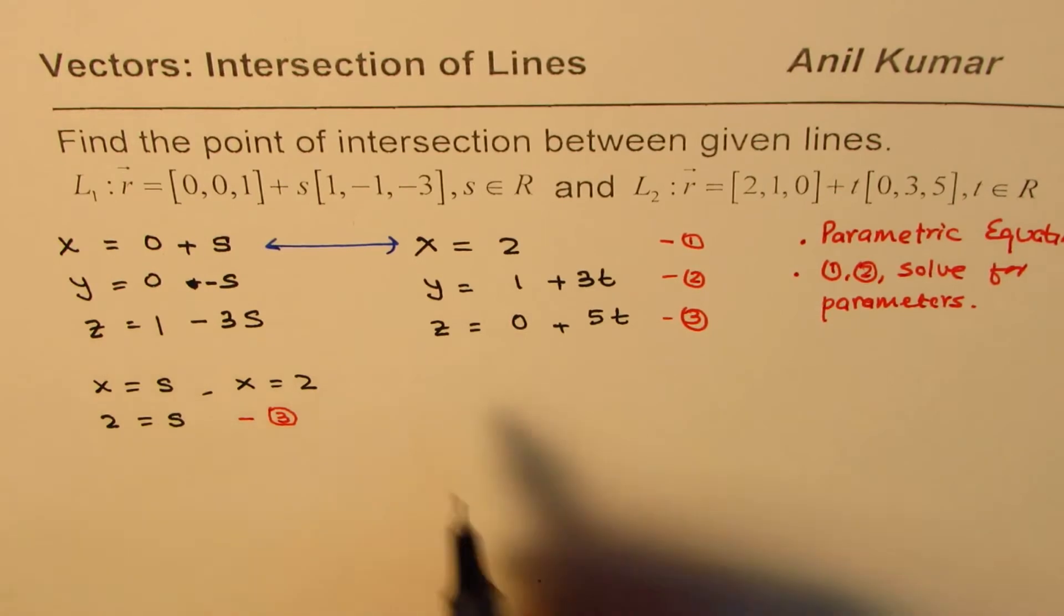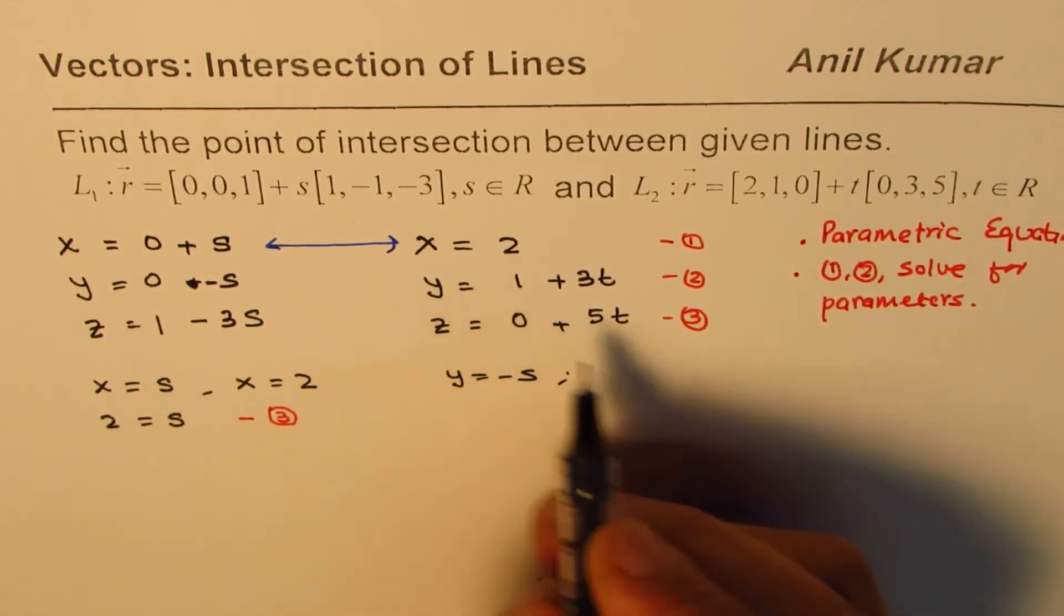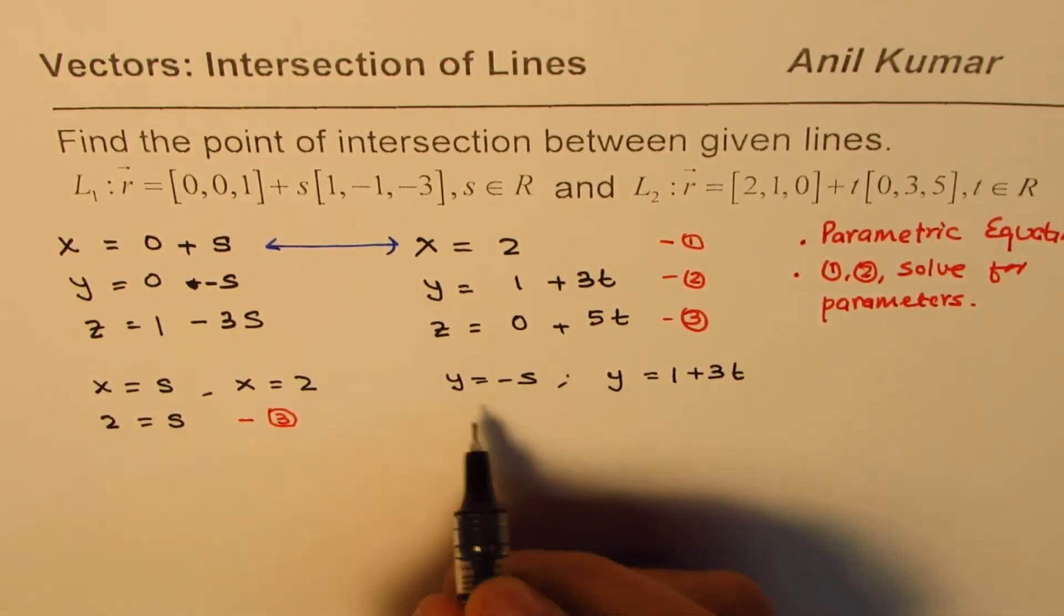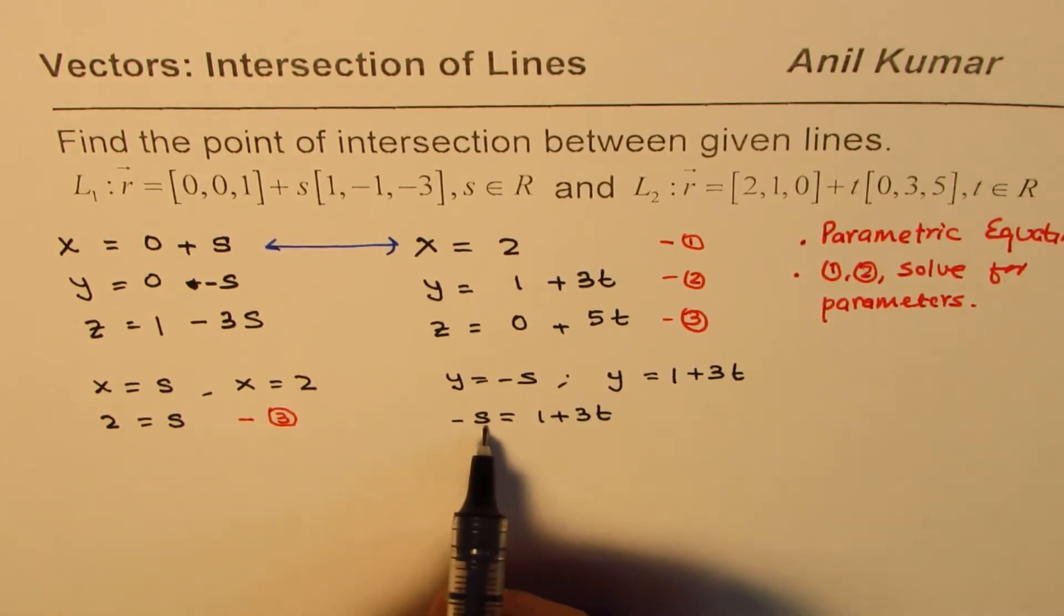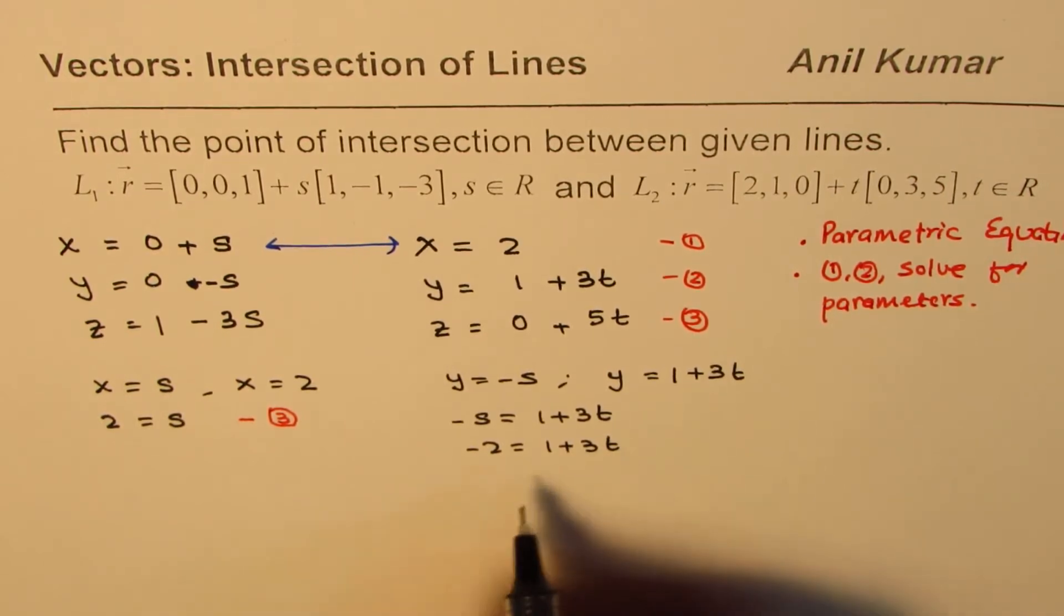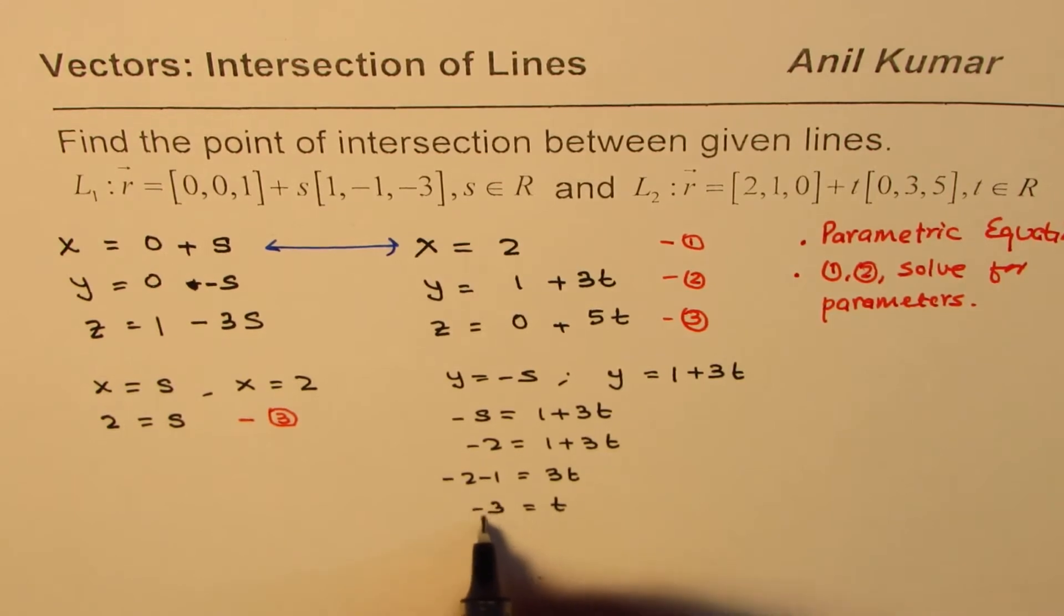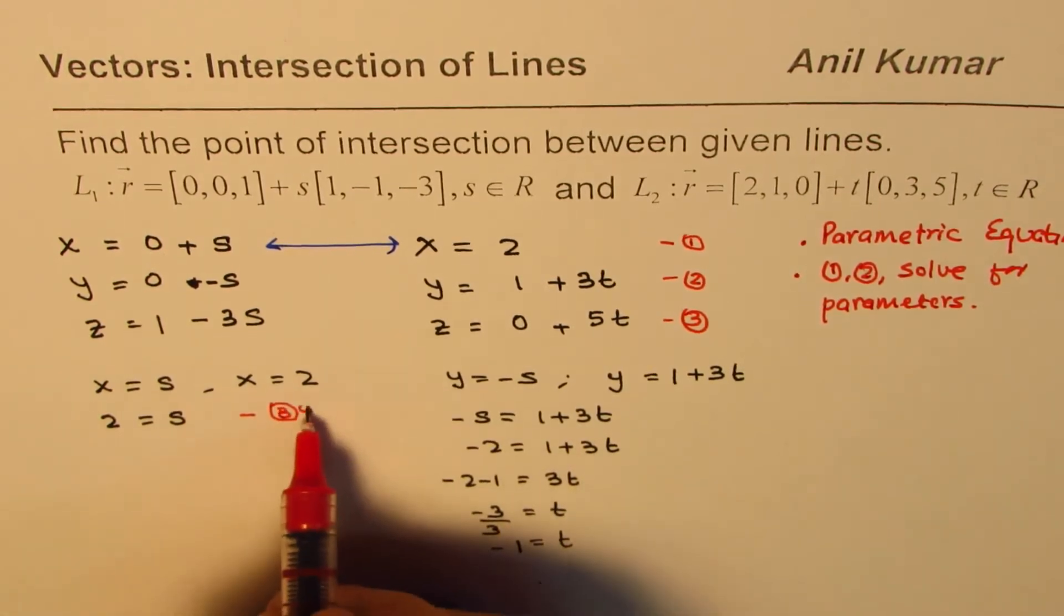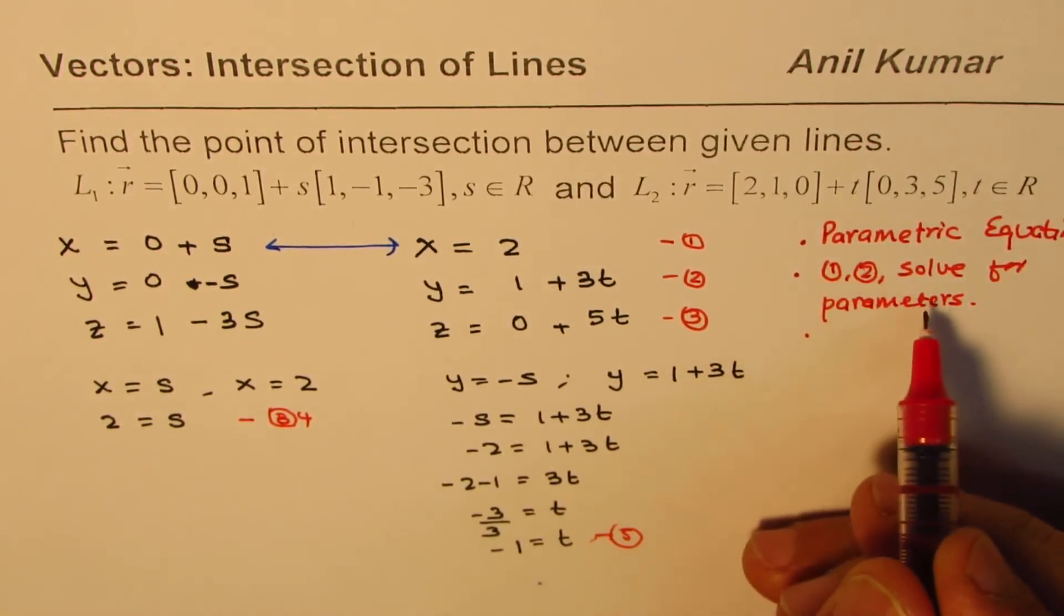Now if you see equation number 2, which is y equals minus s and also we have y equals 1 plus 3t, we could write minus s equals 1 plus 3t. Since we know that s is 2, I can substitute 2 here. So I get minus 2 equals 1 plus 3t. And now we can solve for t. So we get minus 2 minus 1 equals 3t or t equals minus 3 over 3. So we get t equals minus 1. So we get the value of s and t. So these are the two different parameters.